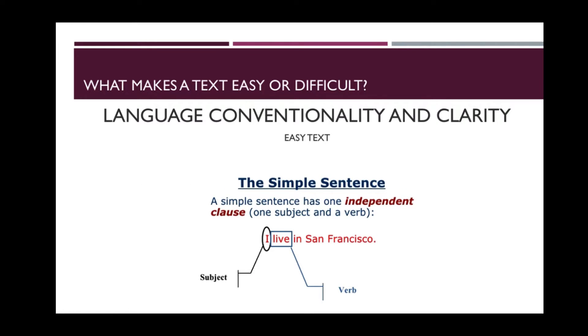Language conventionality and clarity also plays a part in making a text easy or difficult. In easy text, the sentence structure is simple. For example, a simple sentence has one independent clause, meaning a subject and a verb, like the example given: I live in San Francisco. The passage uses familiar vocabulary and simple sentence structures. The author's tone may be informal and appear more accessible.